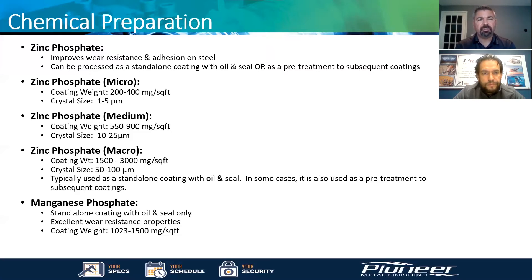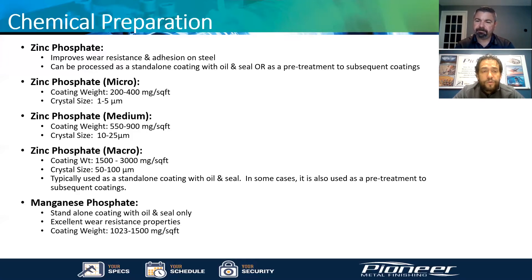Thank you, that's a great overview, Pablo. On micro phosphate — in many cases our customers do what's called a swaging process after bonding their bushings. That's to put the part into compression, because rubber performs much better in compression than in tension. In order to make sure the phosphate doesn't break, those larger crystal sizes will break during swaging, which is why they use that micro phosphate coating weight.